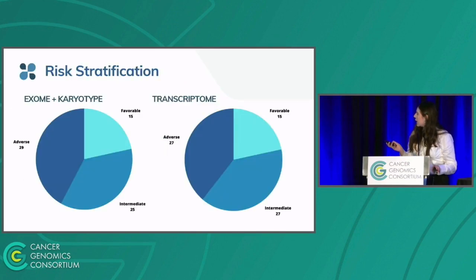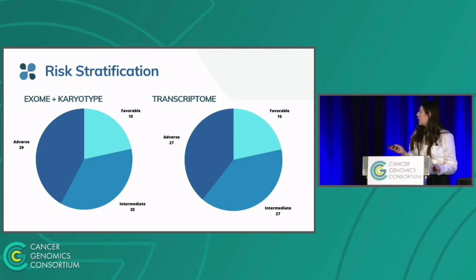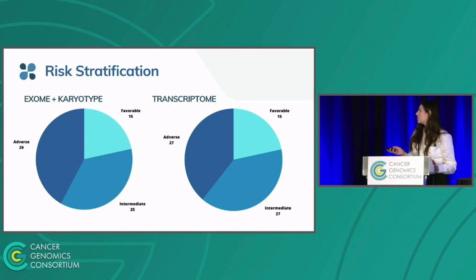Here we have the risk stratification of these 72 samples. As we can see, the proportions are very similar between methods. We have just two cases with discrepant results in risk stratification.